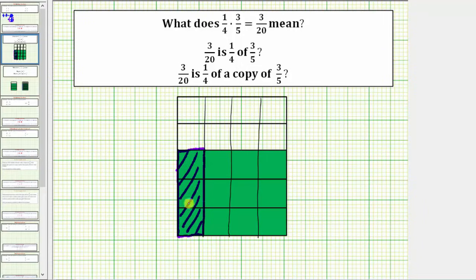So this is 1/4 of 3/5, but if we compare this amount to the whole, we have a total of 20 parts or pieces, and we've shaded three of them, which gives us 3/20. This is why 1/4 times 3/5 equals 3/20. Now let's look at our second example.